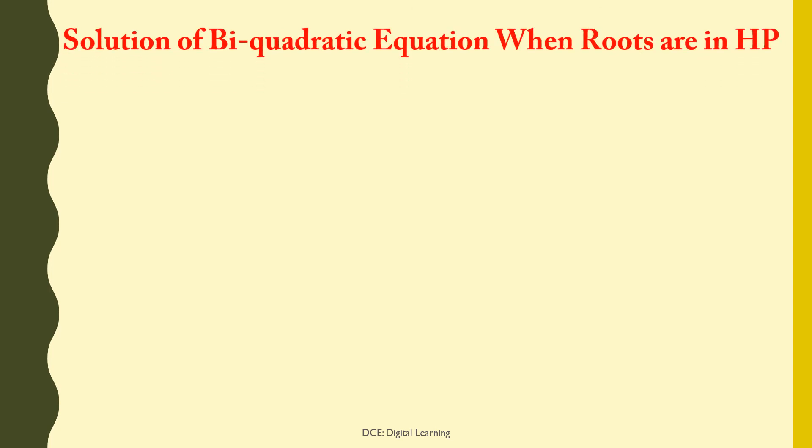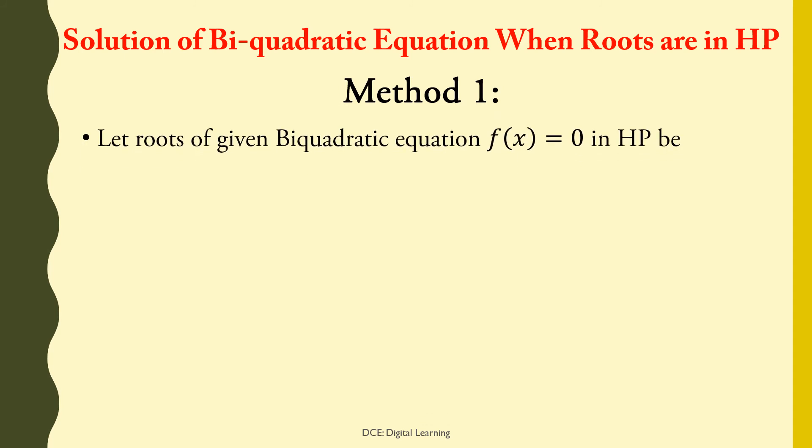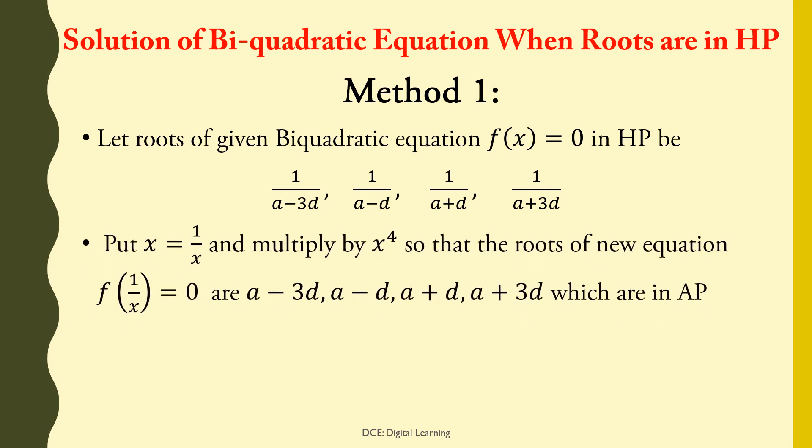Now we shall move to biquadratic equations — Solution of biquadratic equation when roots are in harmonic progression. Method 1: Let roots of given biquadratic equation f(x) = 0 in harmonic progression be 1/(a−3d), 1/(a−d), 1/(a+d), 1/(a+3d). Put x = 1/x and multiply the given equation by x⁴ so that the roots of the new equation f(1/x) = 0 are a−3d, a−d, a+d, a+3d, which are in arithmetic progression.